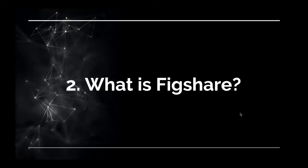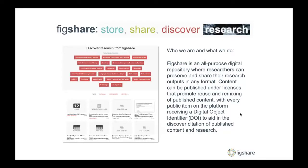Figshare is essentially an all-purpose digital repository where all of your content can be hosted, preserved, shared, and once your research is ready for publication, Figshare can mint a DOI. It can be published under a license of your choice to promote reuse and remixing, and it is on a public platform that is easily accessible and Google findable. It is a way to discover published content and research, and then maybe even gain some metrics, including citations.